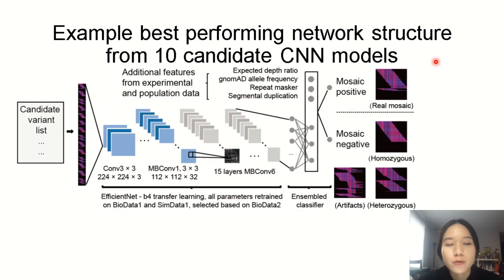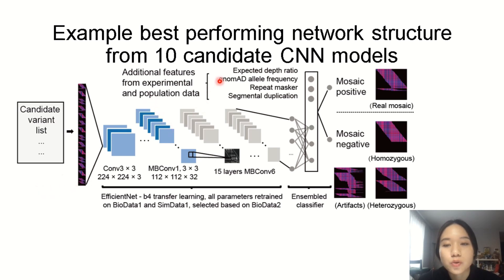With this training set, we performed transfer learning and repurposed 10 types of different convolutional neural networks, including well-known structures like DenseNet, InceptionNet, ResNet, and EfficientNet. This diagram shows one of our best performing network structures, EfficientNet B4. This model takes in a list of candidate images and, through the convolutional layers, extracts the key features of the pileup images. In addition, features from the sequencing experiment and genomic population data — including expected depth ratio, genomic allele frequency, annotation from RepeatMasker, and segmentation duplication — were also fed into the last fully connected layers of the model to facilitate classification.